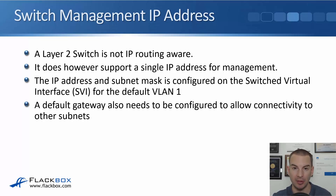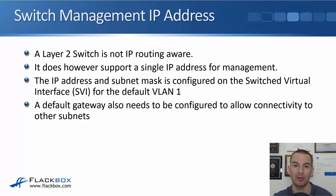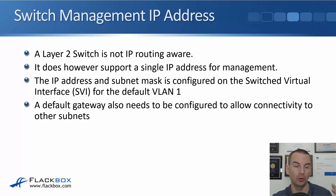We haven't covered VLANs yet — they'll be configured in another section. All you need to know for now is that the default VLAN is VLAN 1, and all Layer 2 switch ports on a switch will be in VLAN 1 by default. To get management connectivity to that switch, we configure our management IP address on the virtual VLAN 1 interface. Our administrators are probably in a different IP subnet, so the switch also needs a default gateway — just like a normal host would.